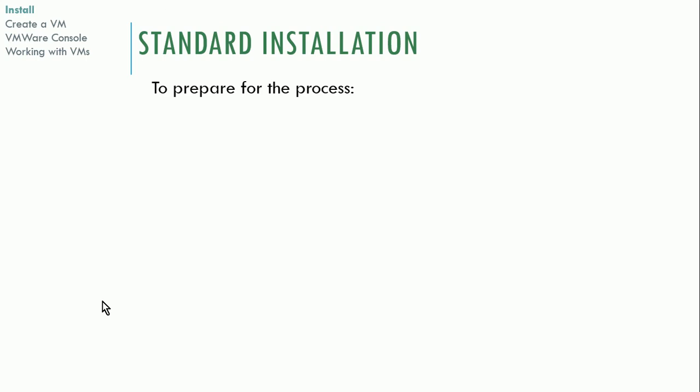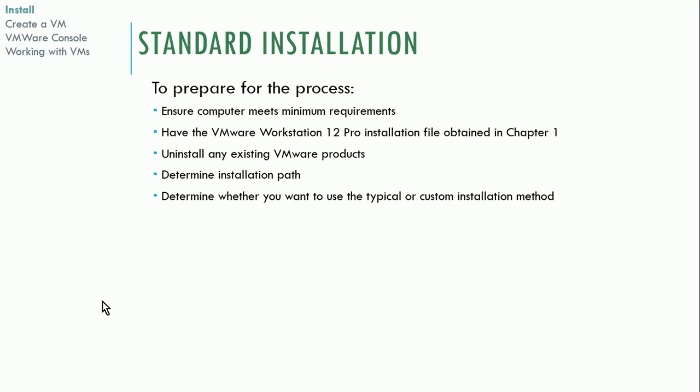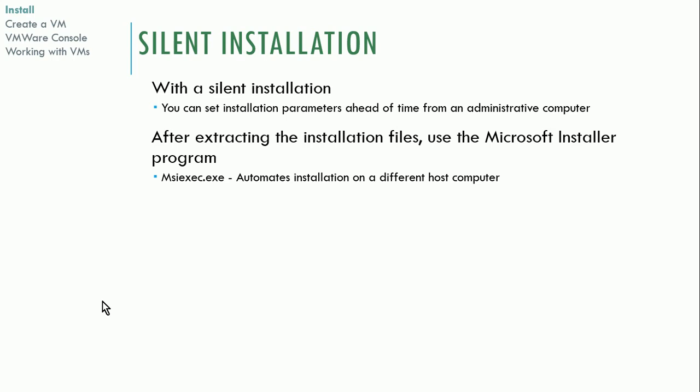For the standard installation, ensure you meet the minimum specifications and have the VMware Workstation 12 installation file obtained earlier in the course — referenced in chapter one of the week one readings, which tells you where to download VMware Workstation 12. If the path has changed, there will be a notification in Blackboard. You'll also need to determine whether you want to use the typical or custom installation method.